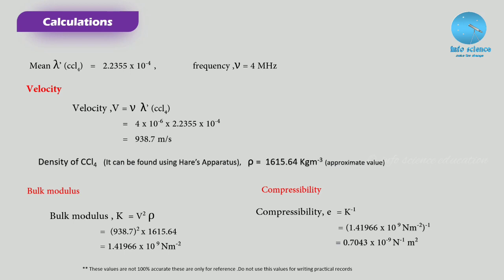The velocity v = ν × λ' for CCl4 = 4 × 10⁶ Hz × 2.2335 × 10⁻⁴ m = 938.7 m/s. That is the velocity of the ultrasonic sound wave through CCl4. The density of CCl4 is ρ = 1615.64 kg/m³. For the bulk modulus, k = ρv². Substituting and simplifying, we get the bulk modulus as 1.41966 × 10⁹ N/m².